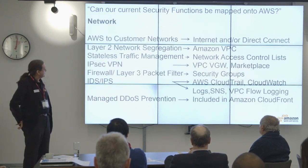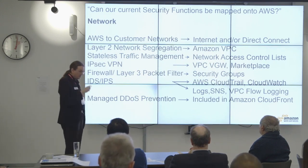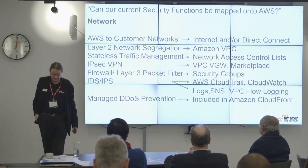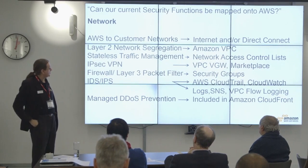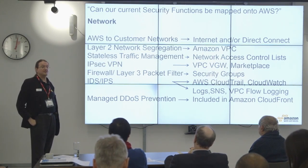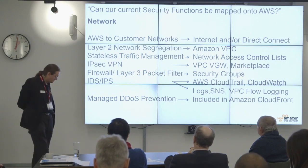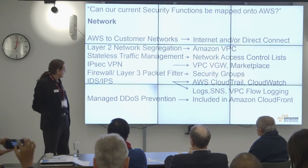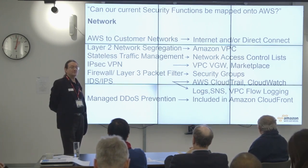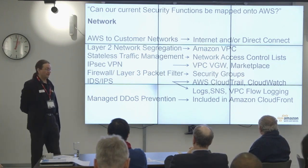From a network perspective, a VPC is a layer 2 isolated lump of network, and that is asserted both by our SOC and PCI auditors. A question that comes up a lot is whether you need to encrypt in transit when you're inside a VPC, instance to instance. PCI DSS control 4 says you have to encrypt across a public network, but it also says that a VPC isn't a public network. I've got customers who do encrypt inside a VPC, but to be honest, most don't.